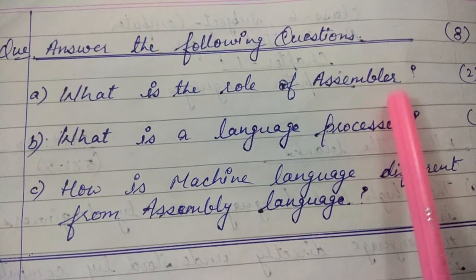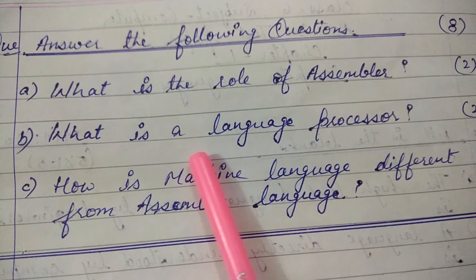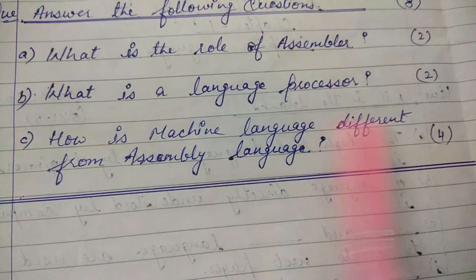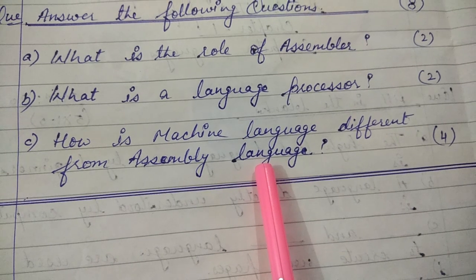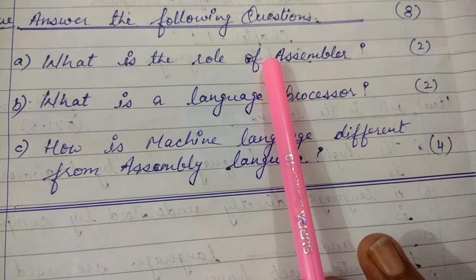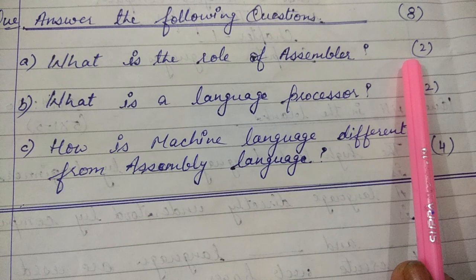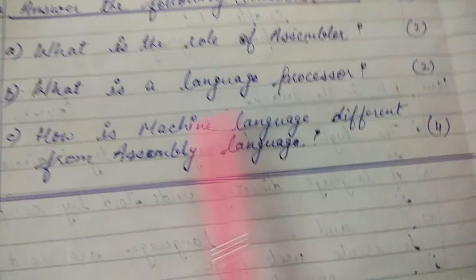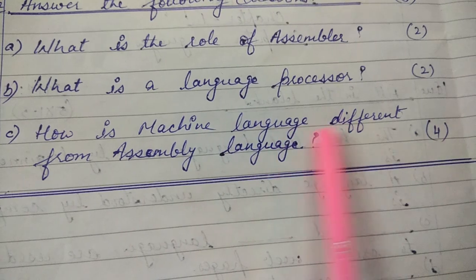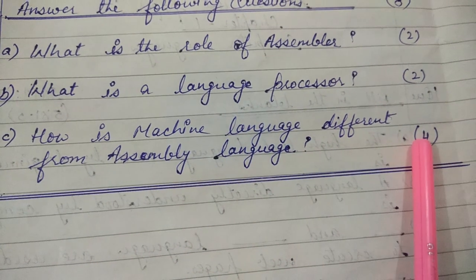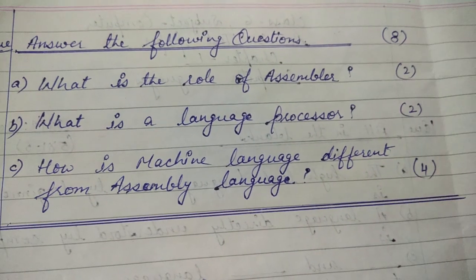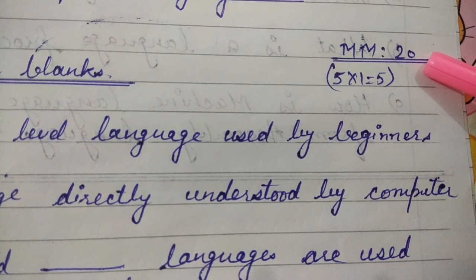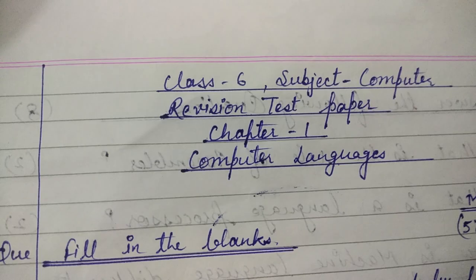Question number four: answer the following. Number one: what is the role of assembler? Number two: what is a language processor? Number three: how is machine language different from assembly language? The first question carries two marks, the second carries two marks, and the third carries four marks, for a total of eight marks.